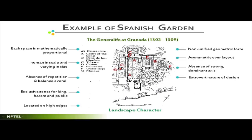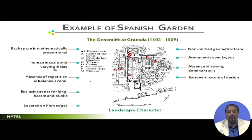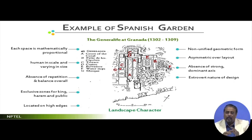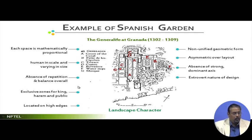Continuing with the same examples of the general life, look at this particular slide. The first point is each space is mathematically proportional - individual spaces are highly geometric. They are not irregular, human in scale and varying in size. Looking at architecture and landscape combinations, the buildings, rooms, or spaces are highly proportional and vary in sizes, never replicating the same thing in the same scale, so there is an absence of repetition overall.